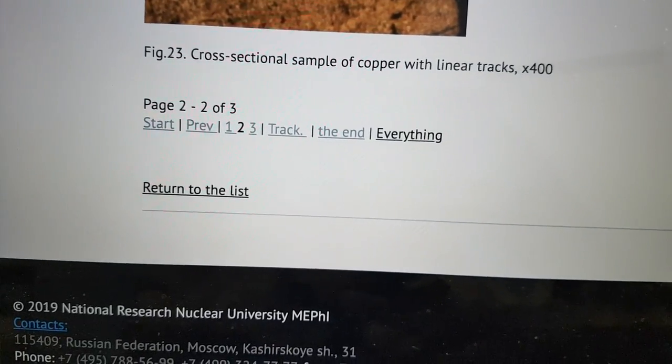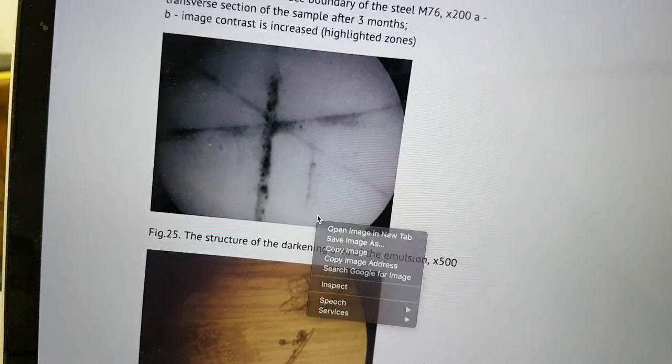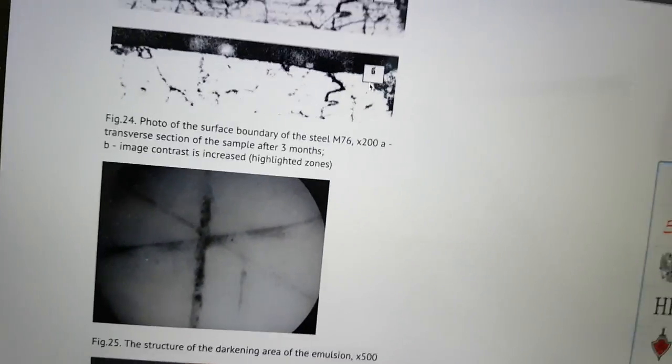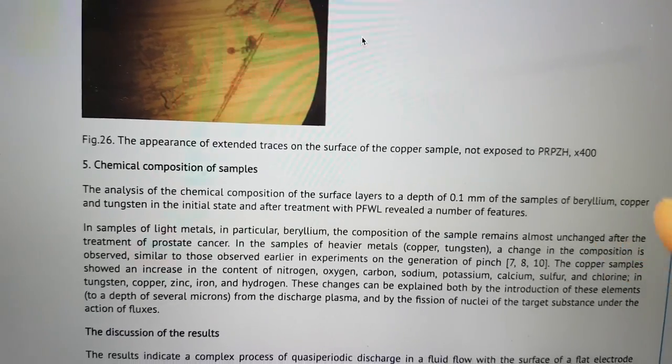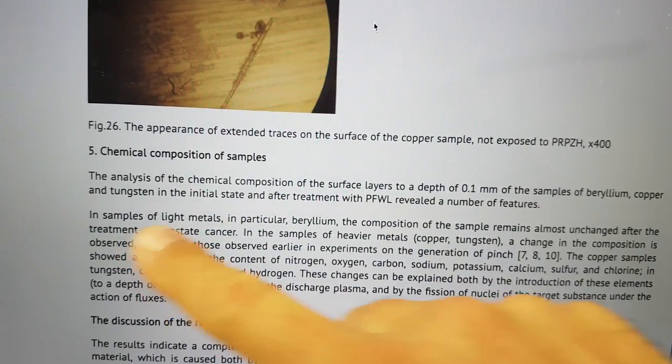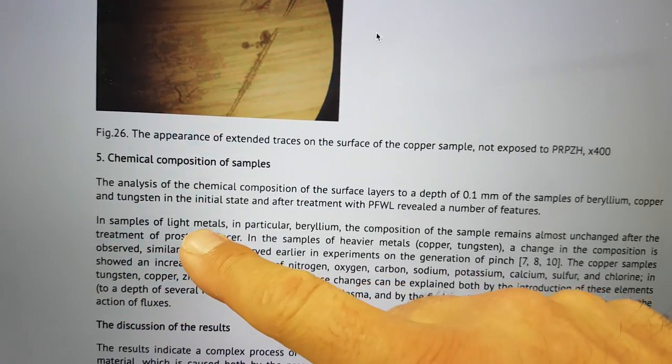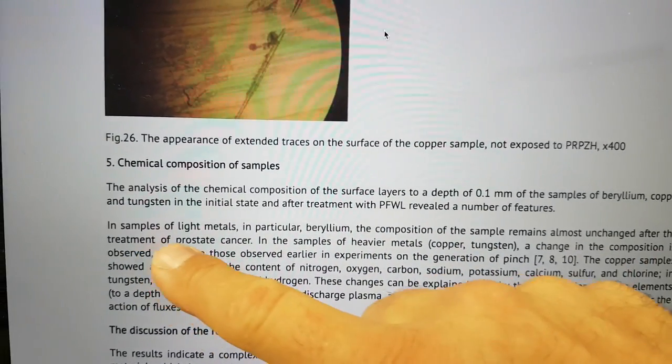We have the ring with the spot in the middle. They're calling these system of zones a superheated metal in the formation of a vortex. This looks very much like the structures you saw on Matsumoto from the early 1990s. There's some random other structures here. In particular light element, in samples of light metals, in particular beryllium, the composition of the sample remains almost unchanged after the treatment.